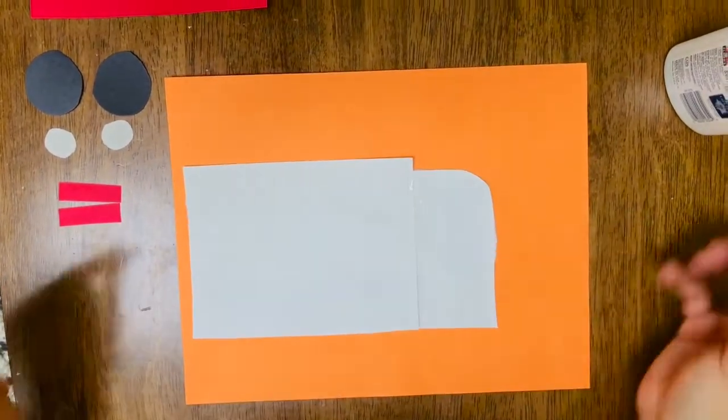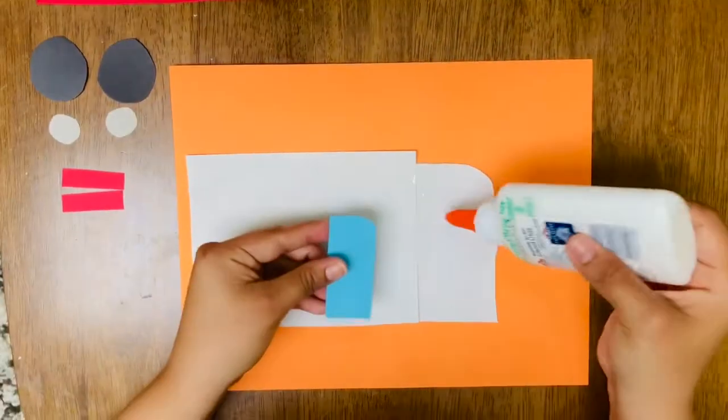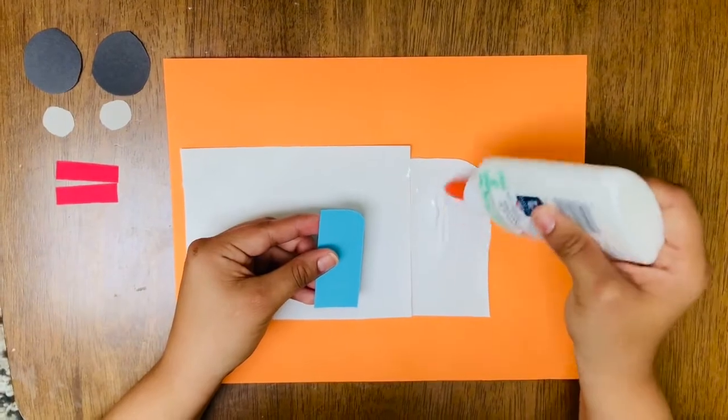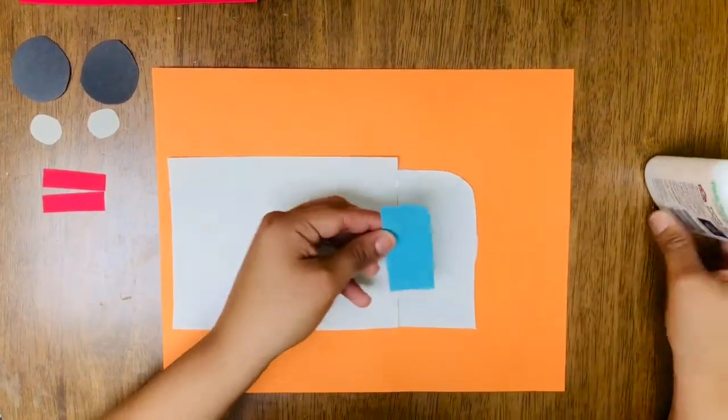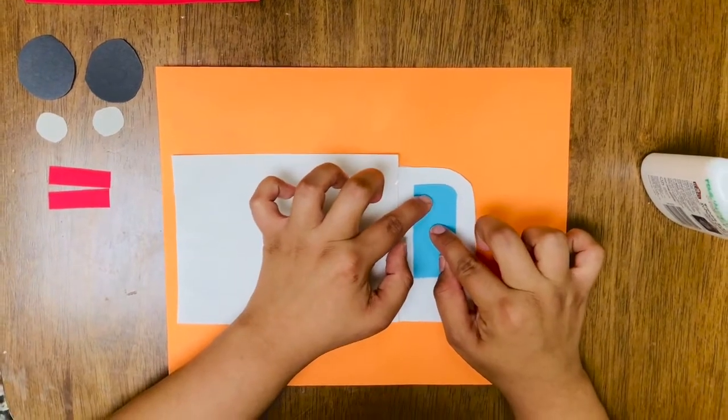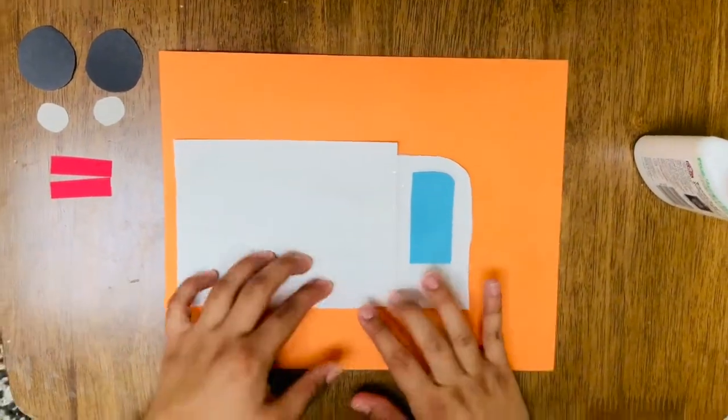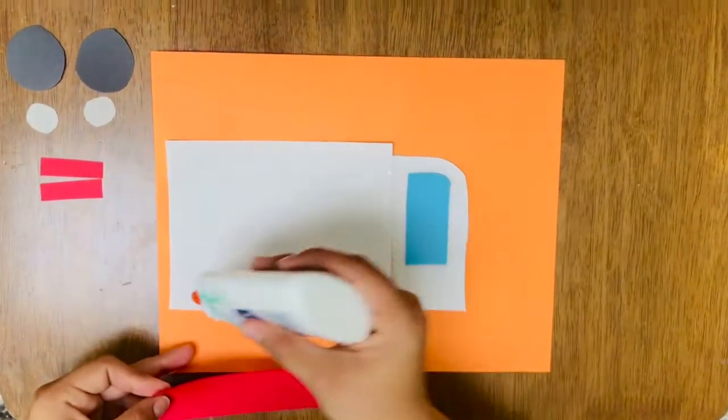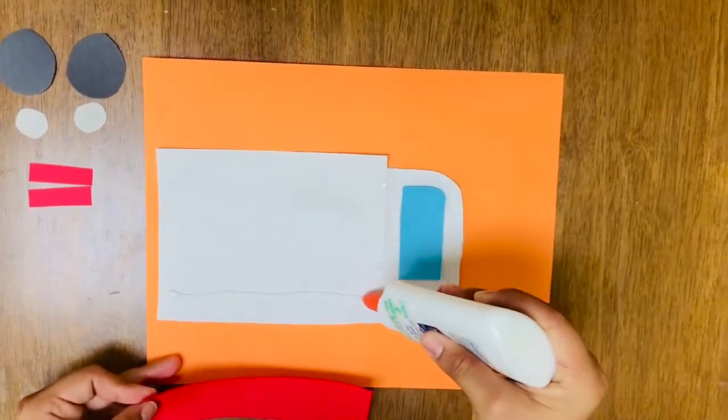Alright, next we're going to take our window. We're going to put it right here. Alright, now we're going to take our long red rectangle and put it right along the bottom.